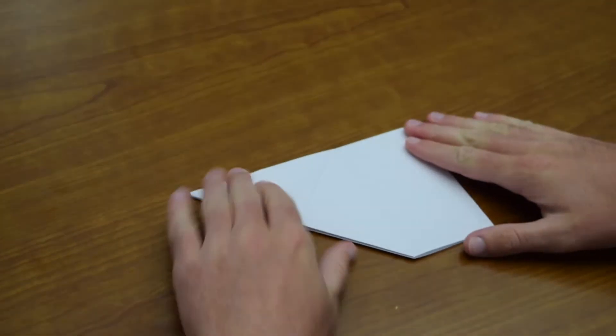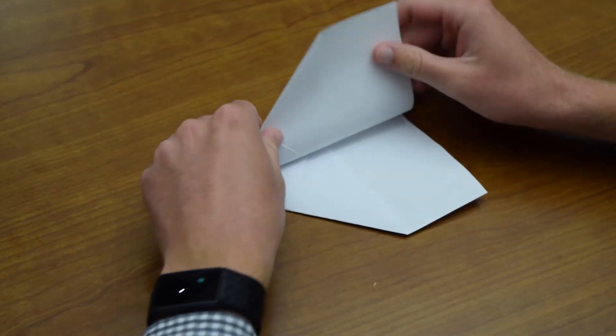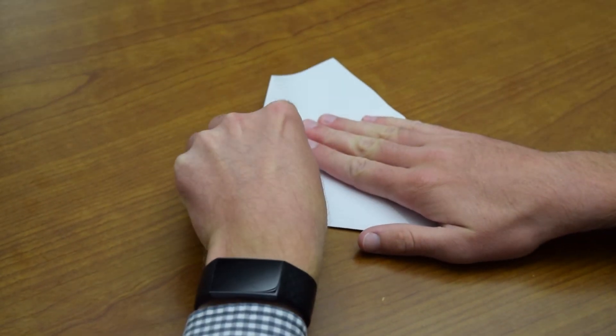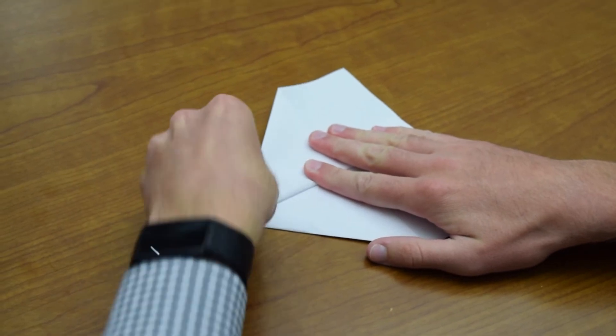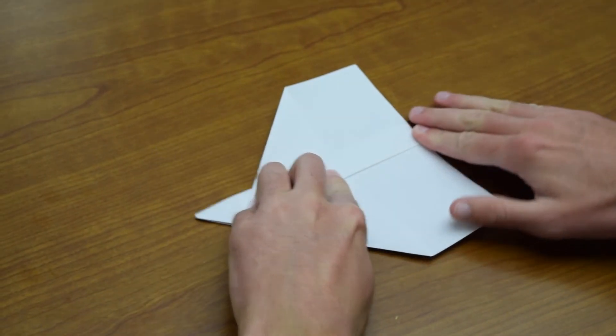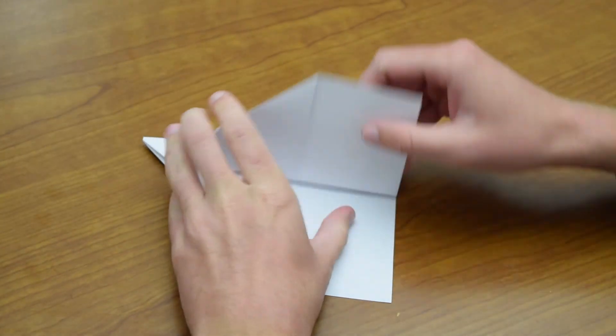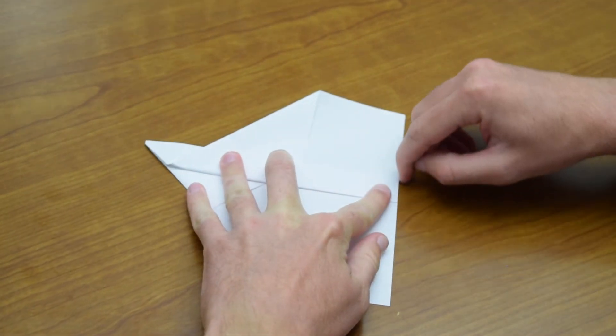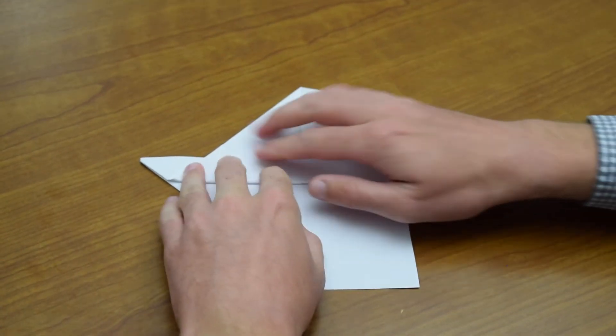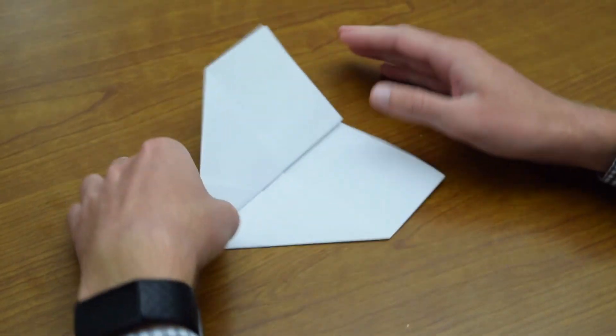Now, to make the wings, we fold vertically upward. You want to make sure that the back, you fold straight up so that in the back it's a straight line all the way. We've made one wing.